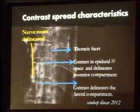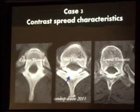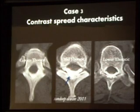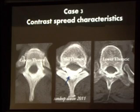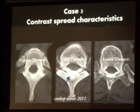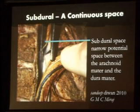Another patient had all the contrast again in the posterior space — no contrast in the anterior space, and no delineation of the roots at all. Everything was lying in one compartment. The surgery was being done with the catheter in situ, but the patient had the same complaint of hypotension in the postoperative period.